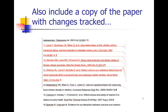Most journals also want you to include a copy of the paper with changes tracked. This is really helpful for editors and reviewers so they can go back and see exactly where you made those changes. When I'm re-reviewing a paper, I like to verify that the changes the authors say they've made were actually made. So having changes tracked and highlighted is very helpful and usually is required by most journals.